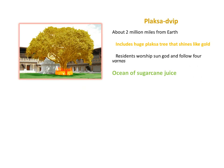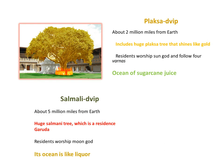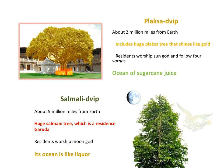Moving on, Plaksudreep has a huge Plaksudreep tree that shines like gold. Residents worship the sun god, and it has an ocean of sugarcane juice. Somalidreep, about 5 million miles from the Earth on average. There's a huge Somali tree there, which is a residence of the bird Gruda. Residents there worship the moon god, and it has an ocean-like liquor.